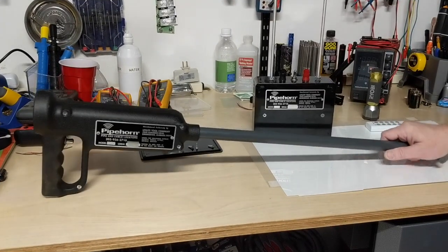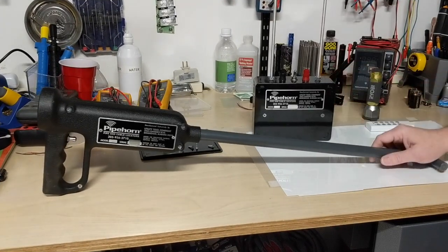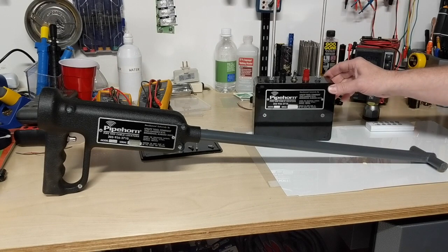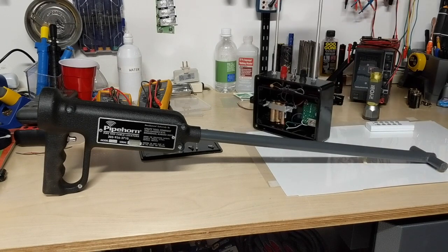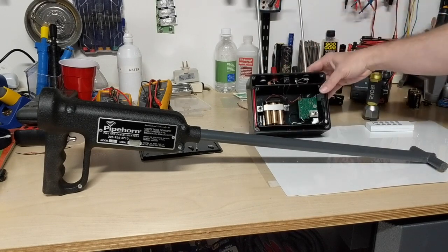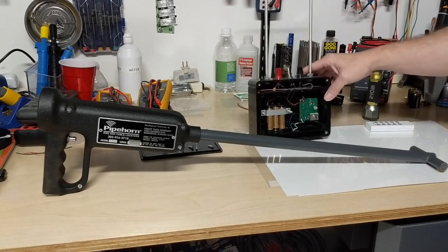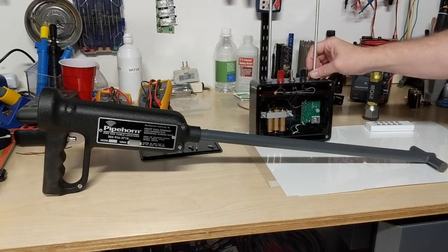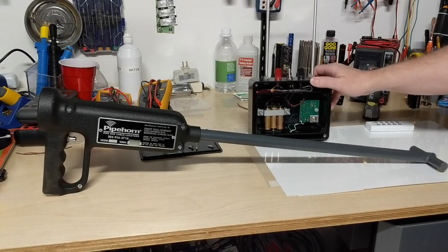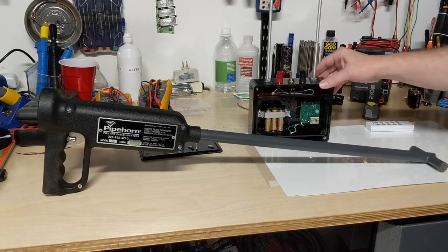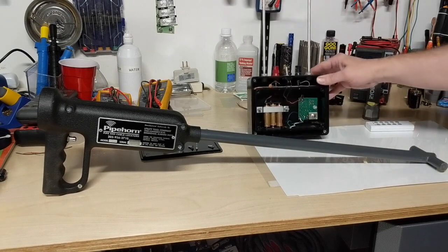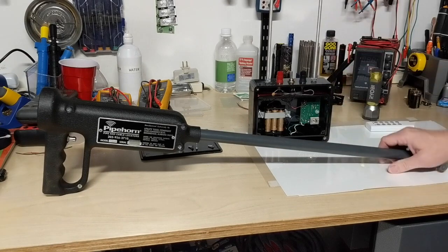So today we took a look at the pipe horn, the transmitter and receiver. We looked at the operation just a little. We actually hooked it up to the scope, looked at the output of the transmitter, adjusted it a little bit. We simulated the signal with a function gen and got to play with it on sweep a little bit, had some kind of unusual sounds coming from the receiver, had a little fun with it.